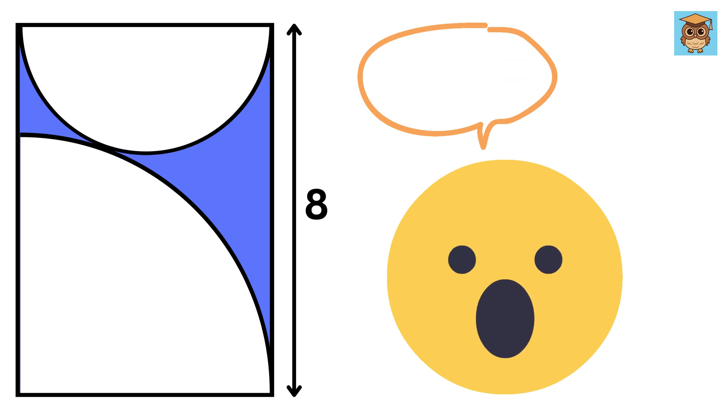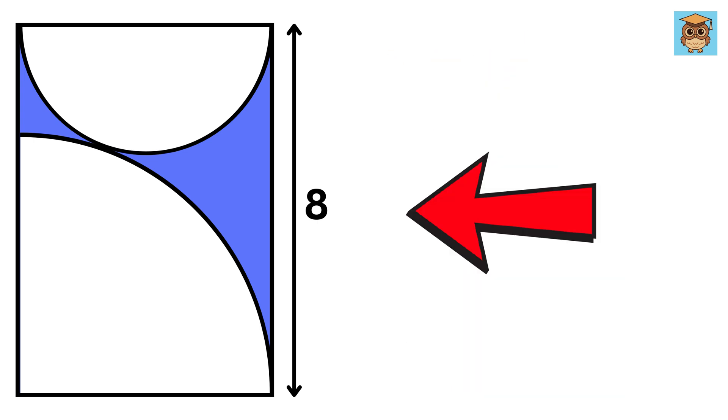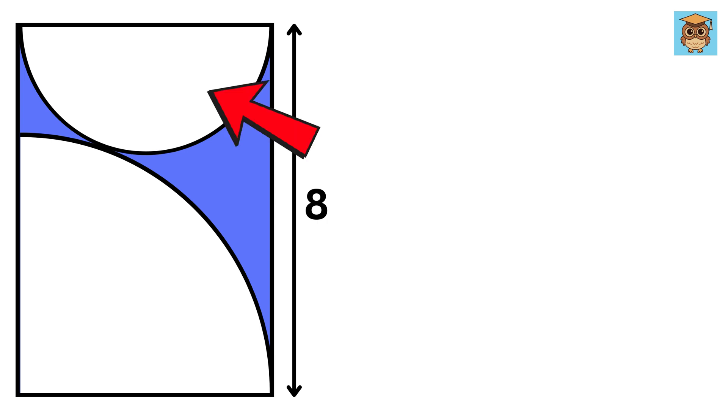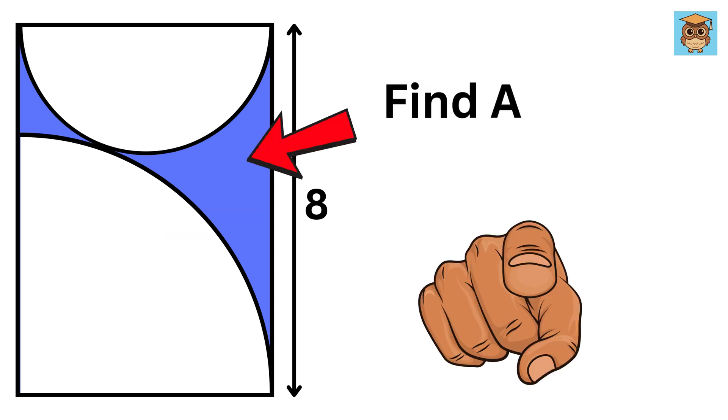This is an amazing geometry problem. We are given this rectangle whose length is 8 and its width is not given, but inside this rectangle we have this semicircle and a quarter circle. Can you find the area of this blue shaded region?